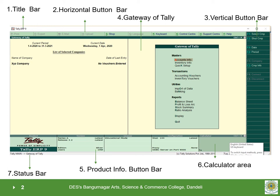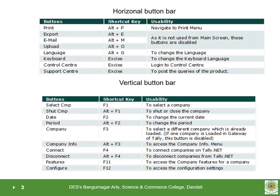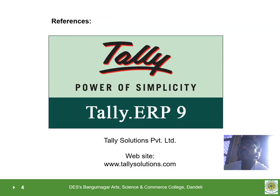7. Status bar. It displays current menu, system date and time, version, release and language. The horizontal and vertical bar consist of various function keys to operate Tally. All of you must visit tallysolutions.com for new updates. See you in more new lessons on Tally. Thank you.